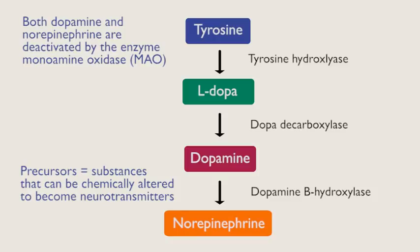This figure summarizes the steps involved in the synthesis of the neurotransmitters dopamine and norepinephrine. Tyrosine, an amino acid, is converted into L-DOPA by the enzyme tyrosine hydroxylase. In the presence of the enzyme DOPA decarboxylase, L-DOPA becomes dopamine, a neurotransmitter.